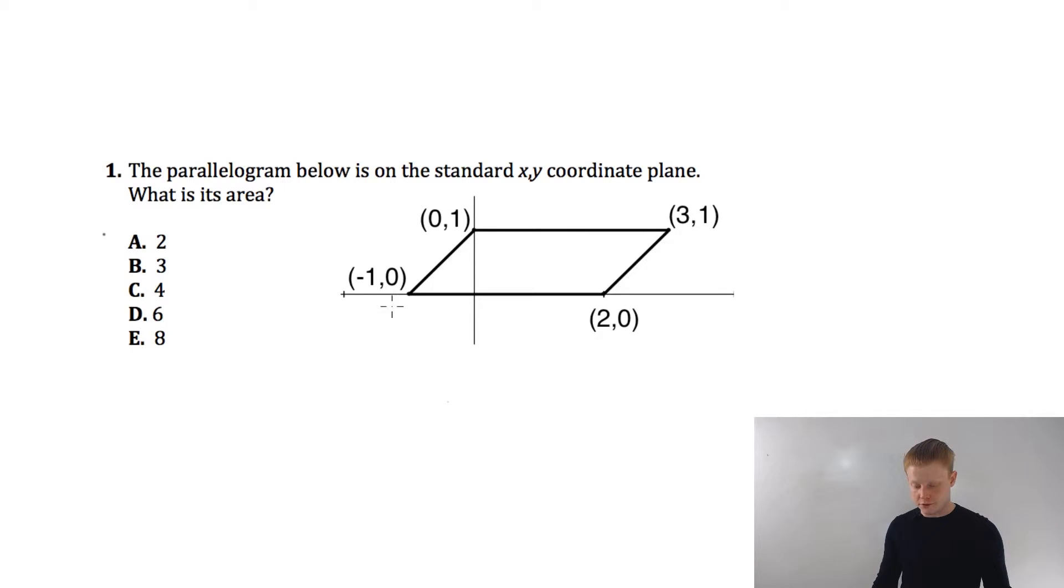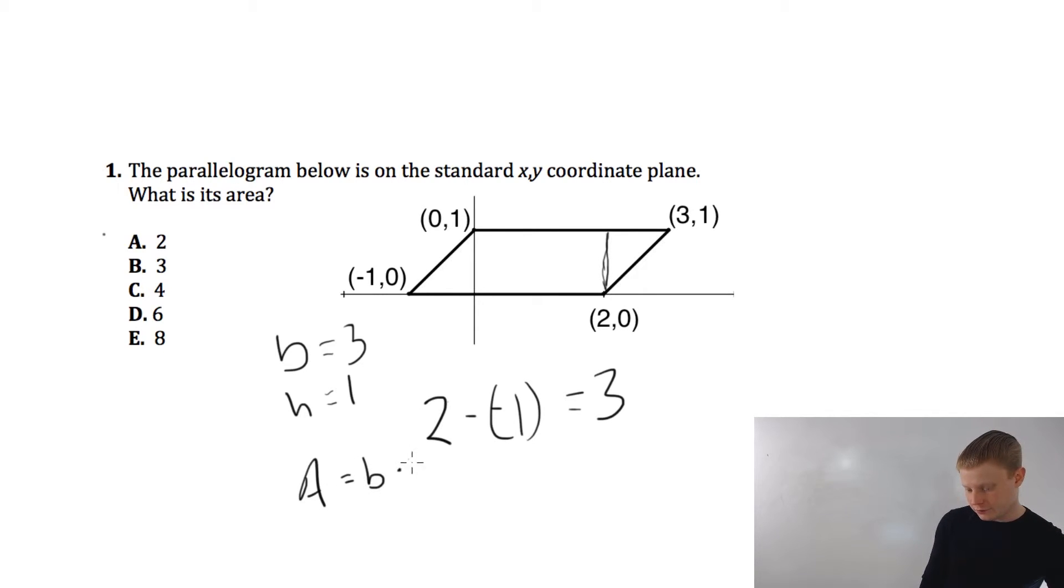So the easy way to do it is define the base. So we go from negative 1 to 2. So the base will have a length of 2 minus negative 1 or 3. And then the height will be, we go from 1 to 0. So the height will be 1. So we have a base of 3, height of 1. Remember, we're always interested in the up and down height. Up and down height. So our area is equal to base times height, which will be area is equal to 3 times 1. Area is 3. Letter B is correct. That's all there is to it.